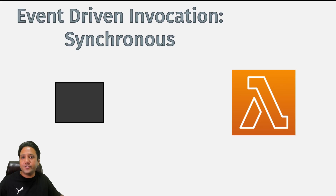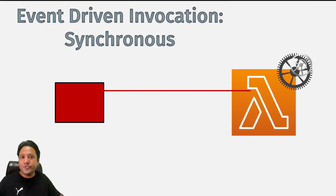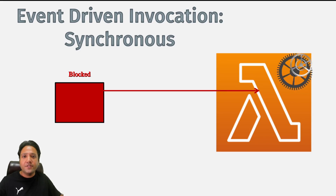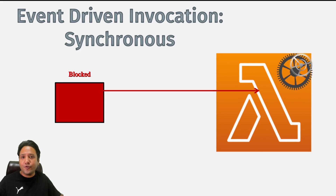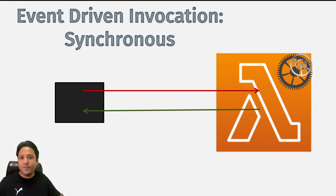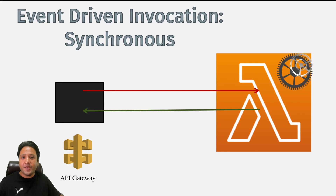In the case of synchronous invocation, whenever the event source generates an event it follows a request-and-response pattern. The request is initiated, Lambda processes the request, and until the request is not fulfilled the event source will be blocked. Whenever Lambda completes the request it is going to send the response back to the event source, and then the event source will be unblocked.